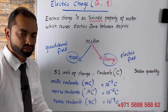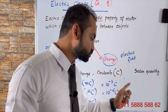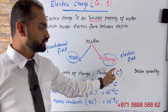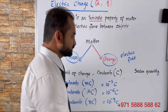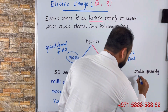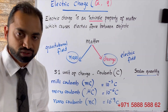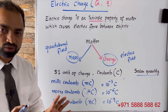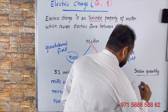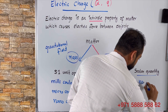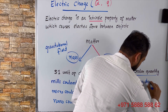What is the SI unit of electric charge? The SI unit of electric charge is coulomb, and we represent coulomb by the letter C. Electric charge is a scalar quantity. Scalar quantity means it has no direction.